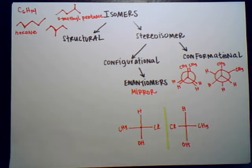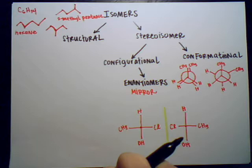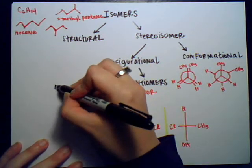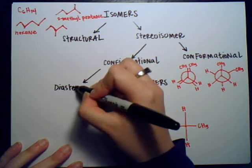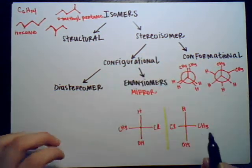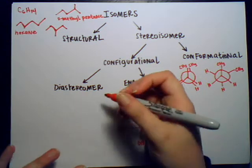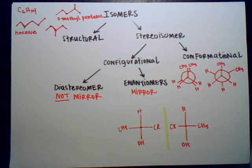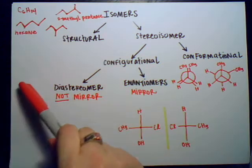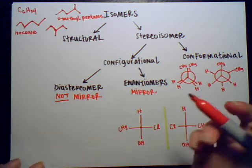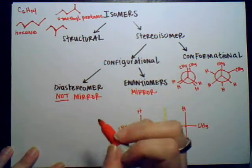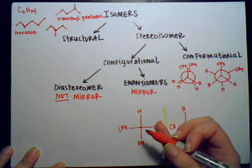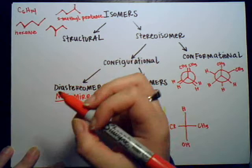The other type of configurational isomer is called a diastereomer. If enantiomers are mirror images, diastereomers are not mirror images of each other. A diastereomer is going to have parts of it that are mirror images and parts of it that are not — therefore making it neither conformational nor an enantiomer. But also it cannot differ structurally.